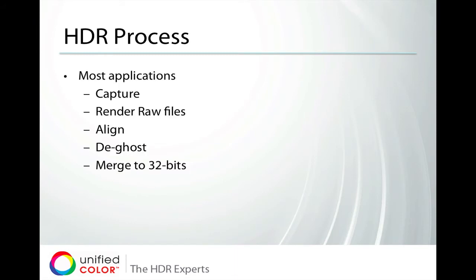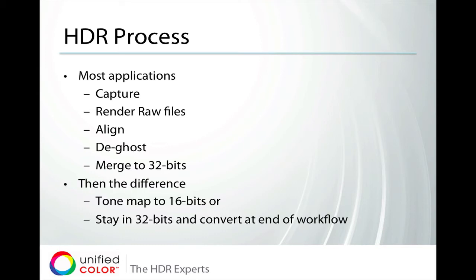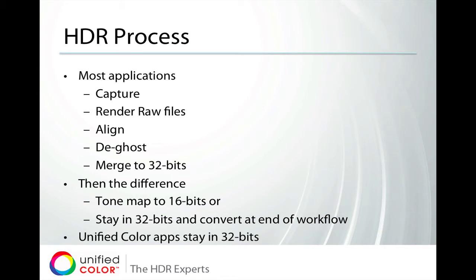The HDR process is similar for most applications: you capture the images, you render the raw files, you align them, apply some de-ghosting algorithm, and merge them into 32-bits. But that's where it starts to change. Most applications will tone map the image immediately into 16-bits, which means you're giving up a lot of that information in the scene. The other option is to stay in 32-bit mode and convert only at the end of the workflow. Unified Color applications all work on the full 32-bit image data after the merge.